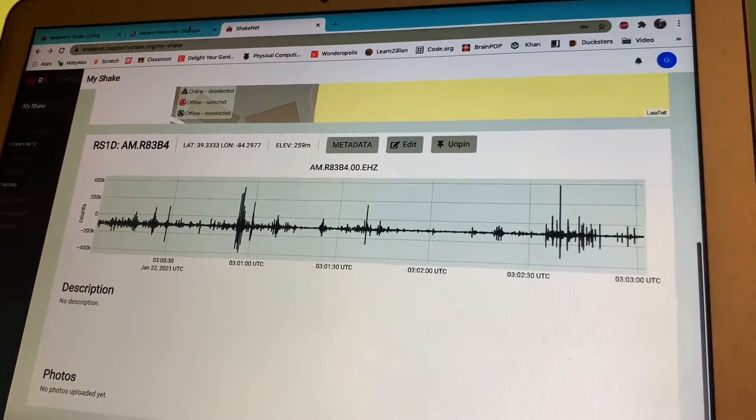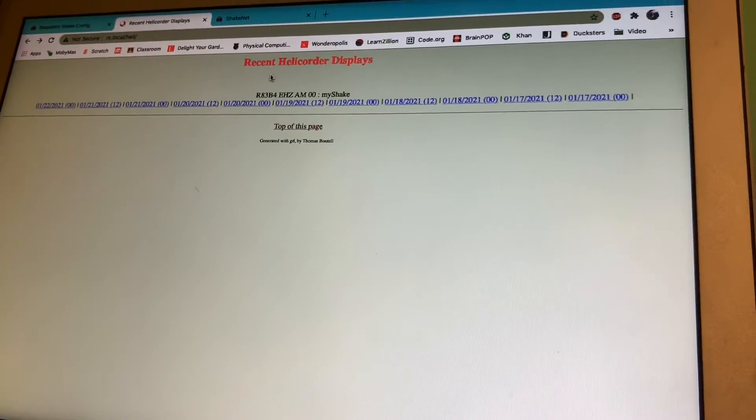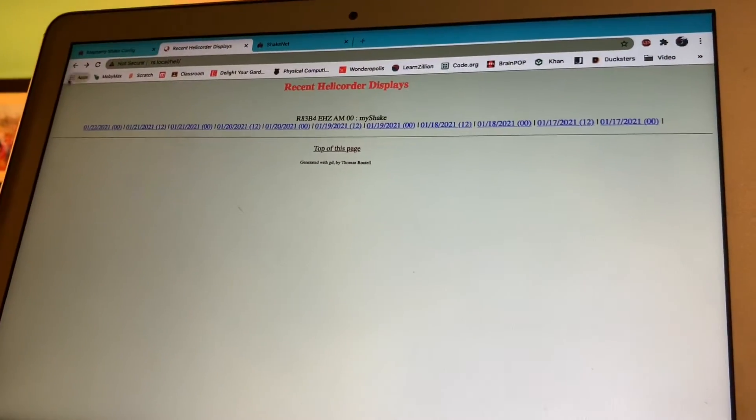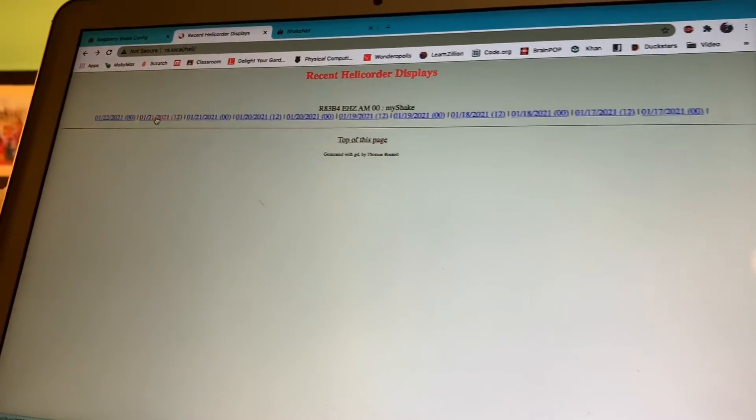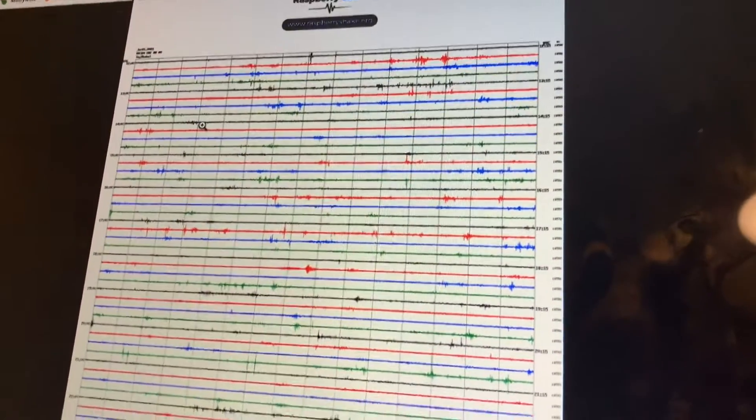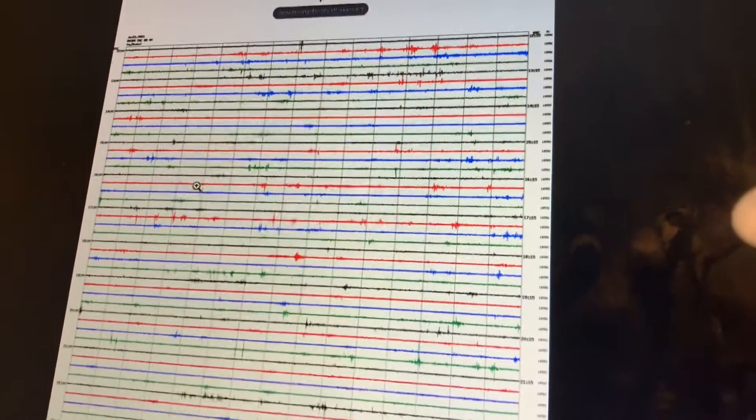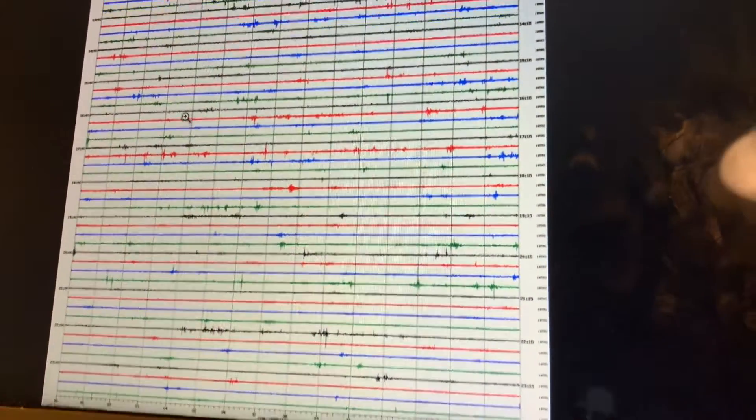Now I'm going to show you something we call RS.local. It shows us just our Raspberry Shake. This is today when there was no disturbance, and it all looks pretty normal.